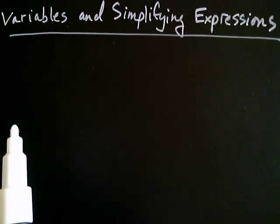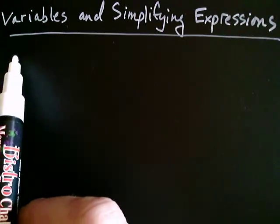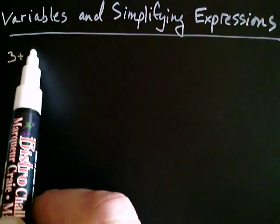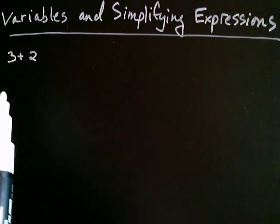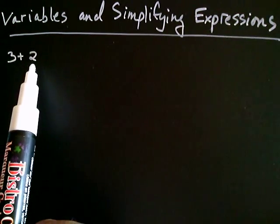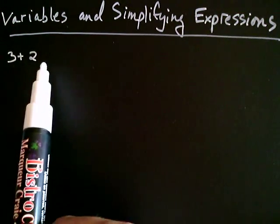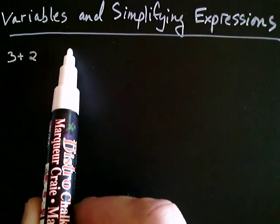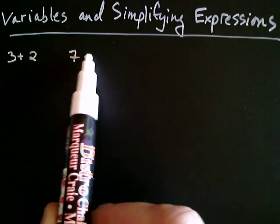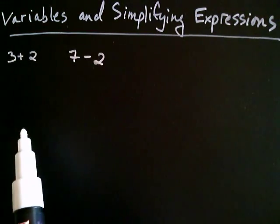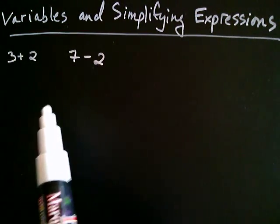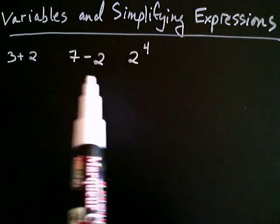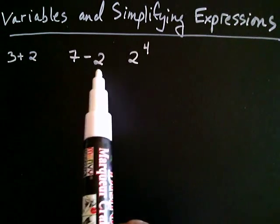So we know that if you had two numbers, let's say three and two, you could take those two numbers and you could add them together. Let's just focus on the two for a moment. I can take the two and I can add it to three. What are some other fun things I can do with two? I can take seven and I can subtract two from seven. I can also take two and I can raise it to the fourth power. So these are all things that we can do with the number two.